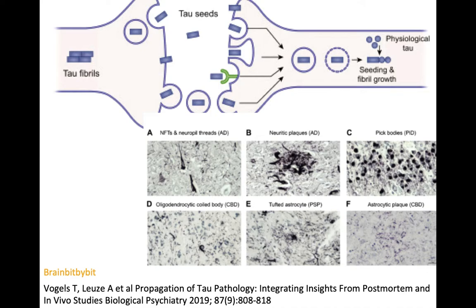This pathologic tau propagates through the brain in the same way a prion disease like Creutzfeldt-Jakob would. In a schematic drawing of this propagation: abnormal tau fibrils in one neuron get transported via the axon toward the synaptic cleft, enter the extracellular space, and are taken up by an endocytic vesicle in the dendrite of the next neuron. As long as it stays encapsulated everything is fine, but if the vesicle ruptures, pathologic tau enters the next neuron, causes normal tau to change its shape, and leads to growth of fibrillary tangles and seeding of the tau protein.